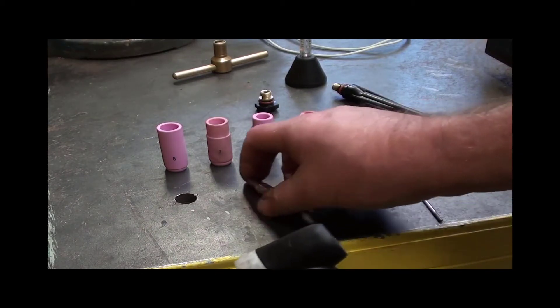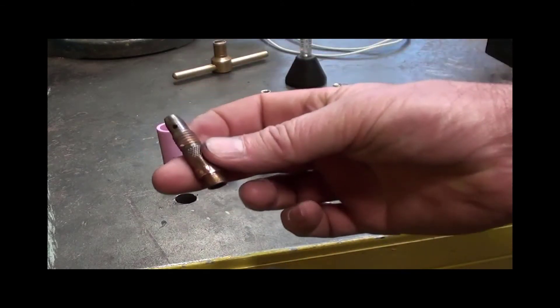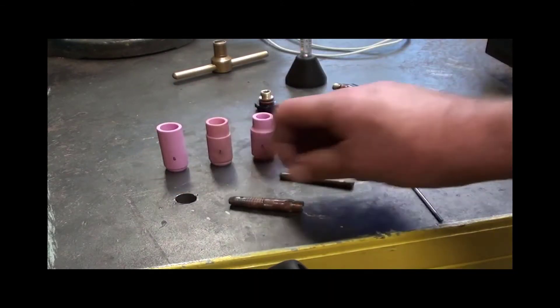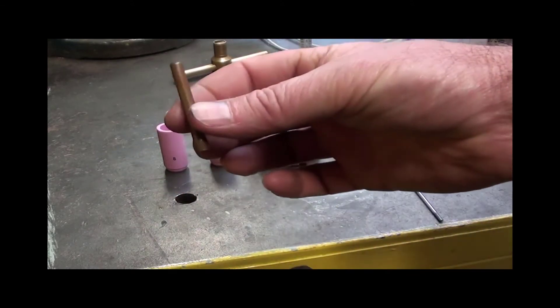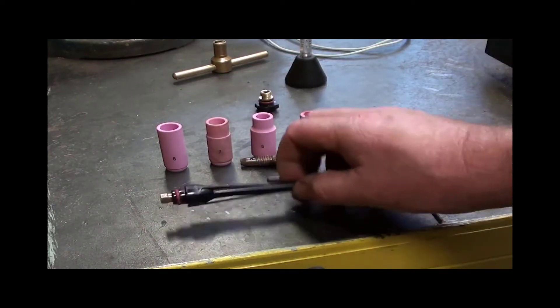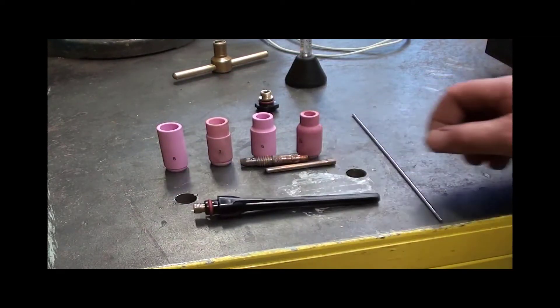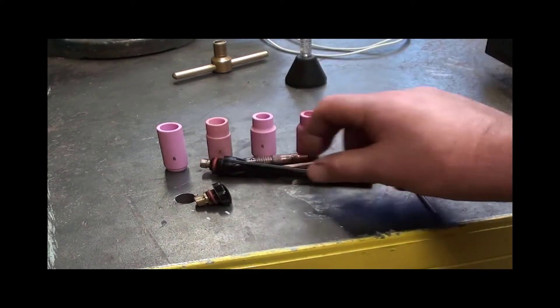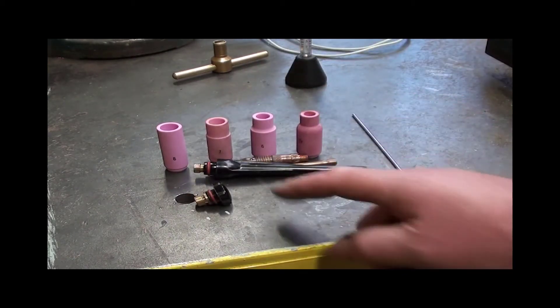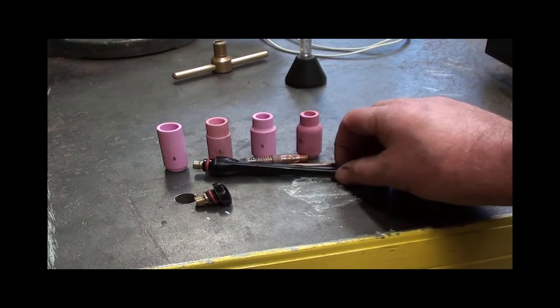So all the pieces to assemble it, we've got this collet holder here. We've got the collet that goes into the collet holder. On the back face of the torch, we've got a long back cap and we've got a stubby back cap. They actually make an intermediate size one, which I haven't got on the table.